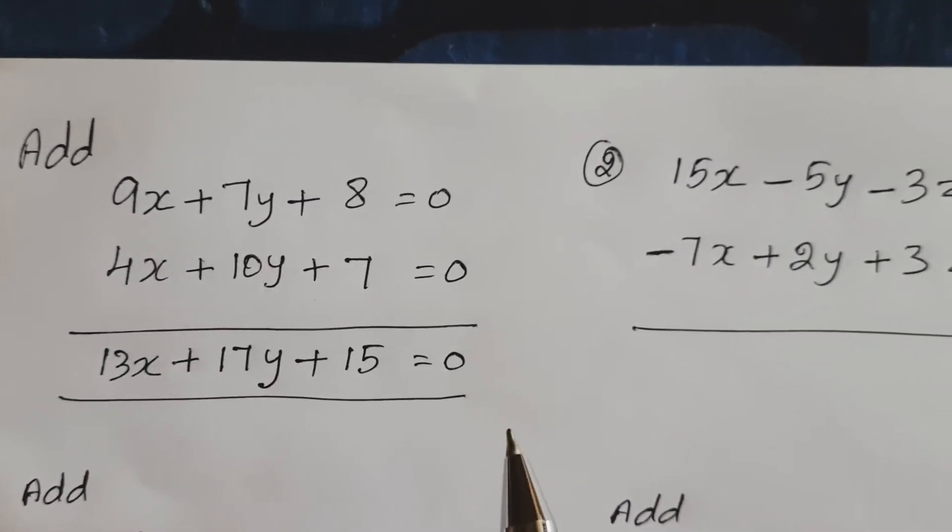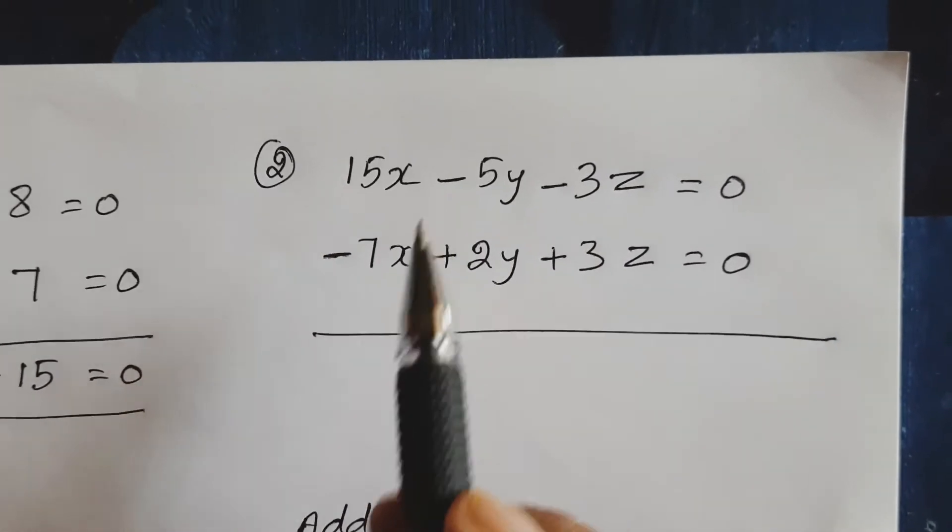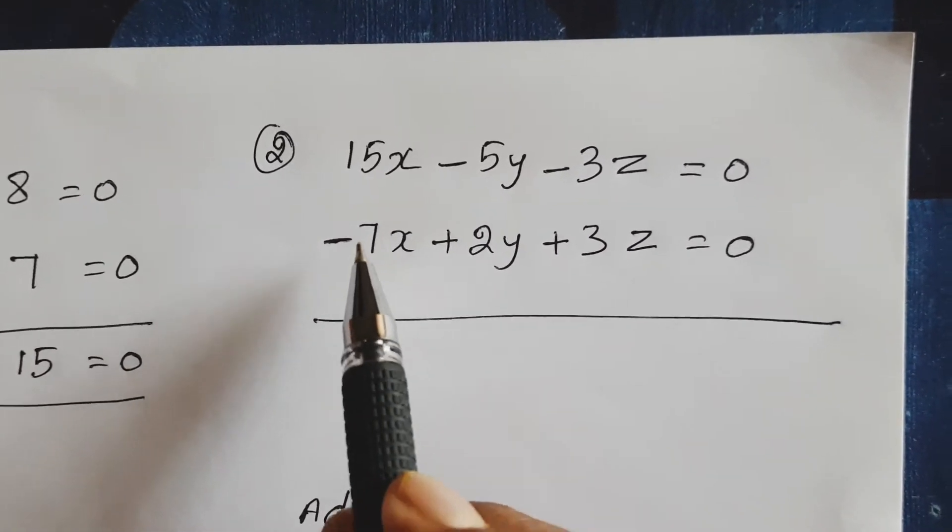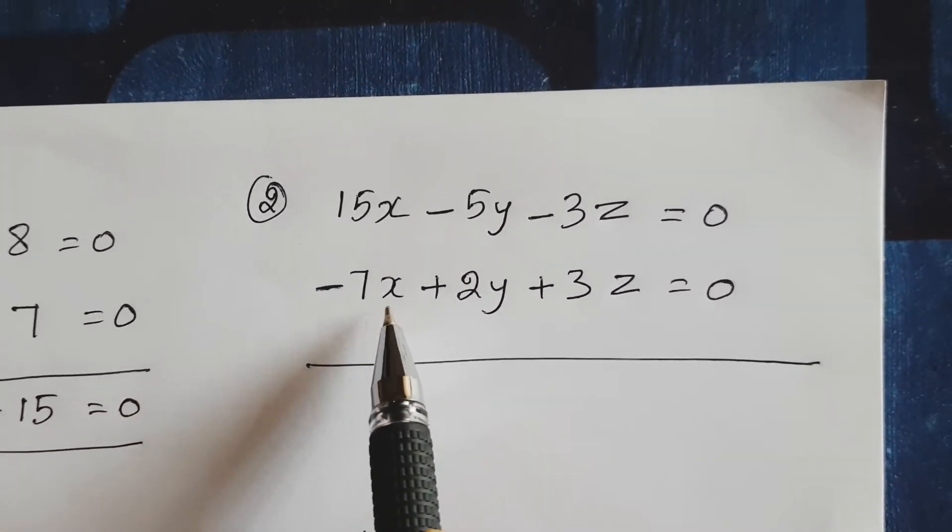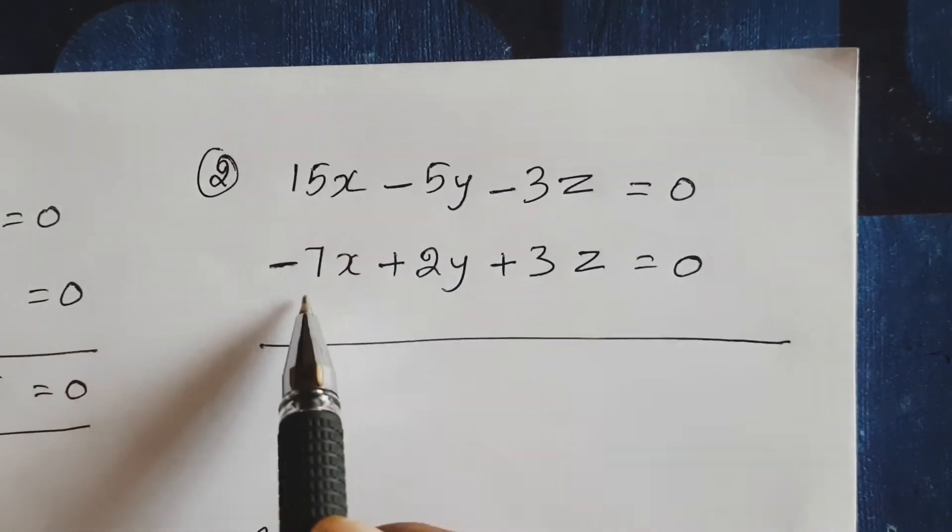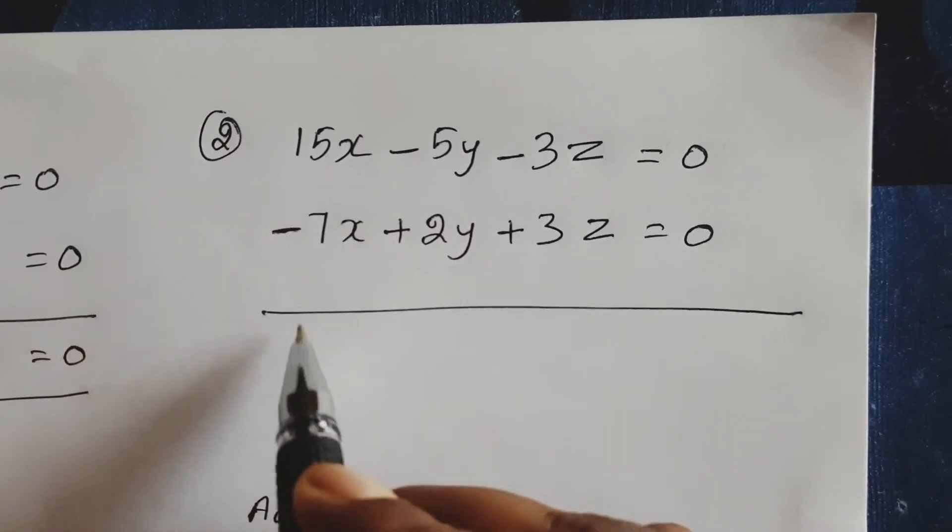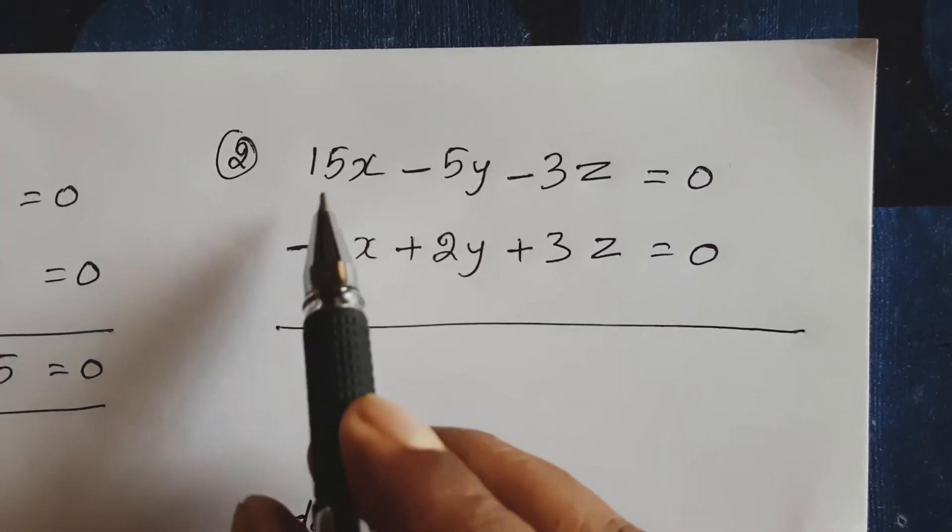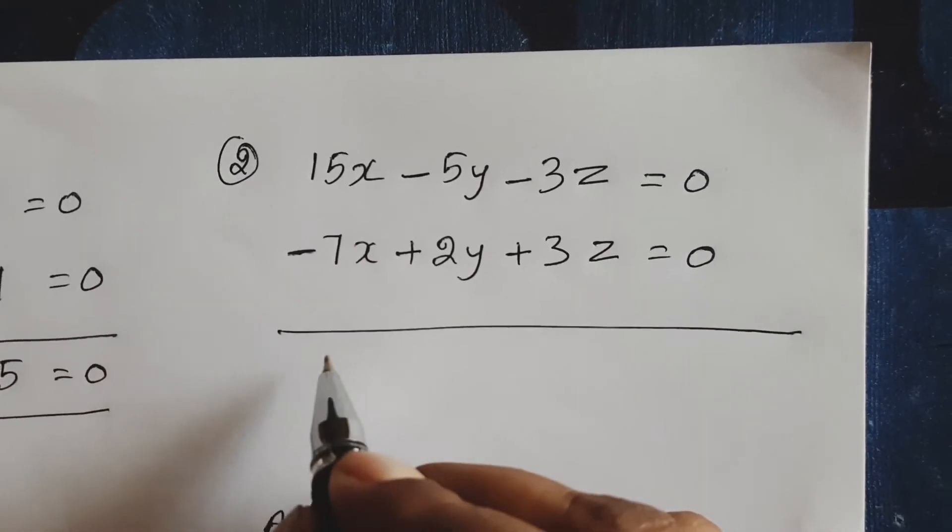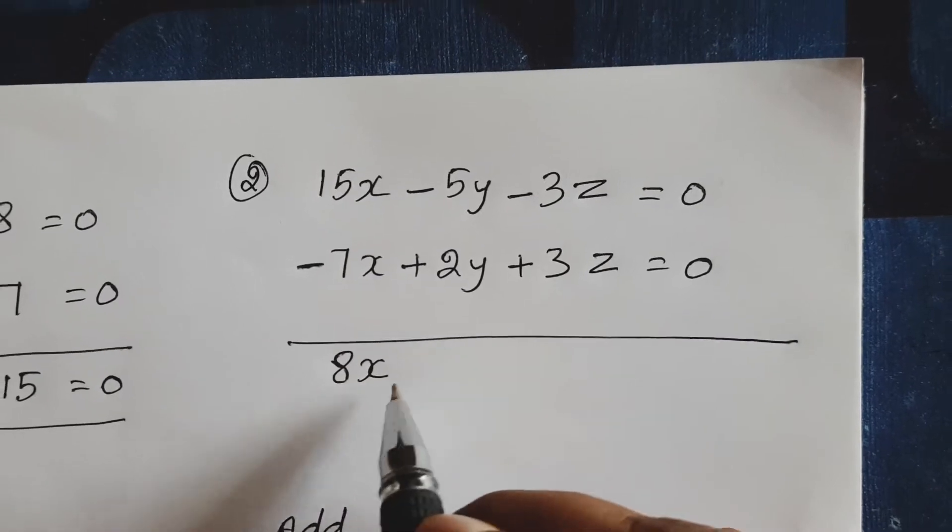Second expression: 15x plus minus 7x. So here 15 is the higher value, plus sign. Here negative sign, lowest value. So positive sign: 15 minus 7, 8x.